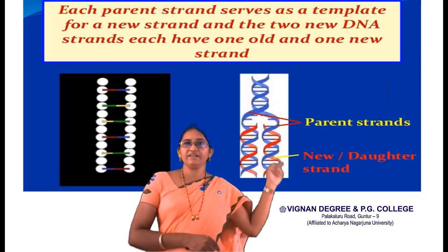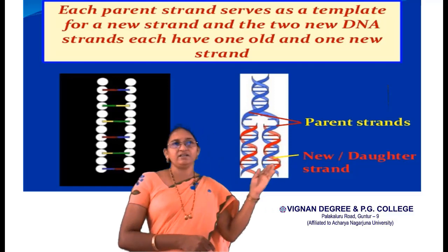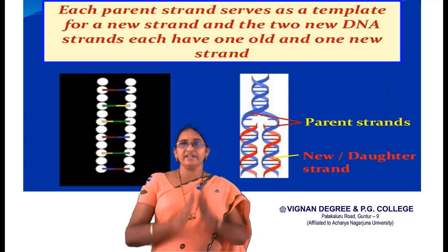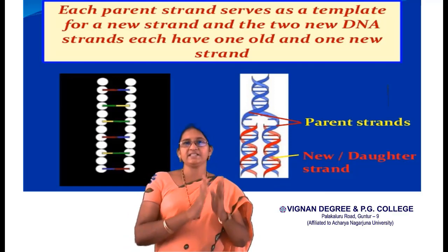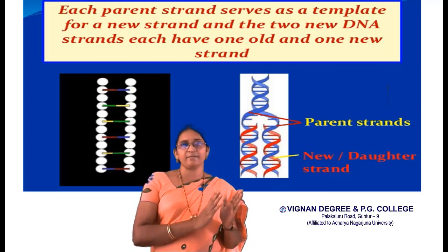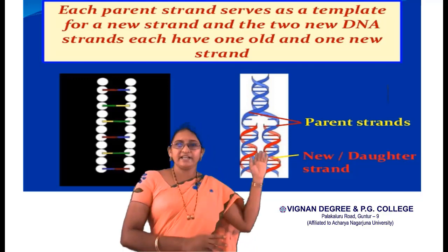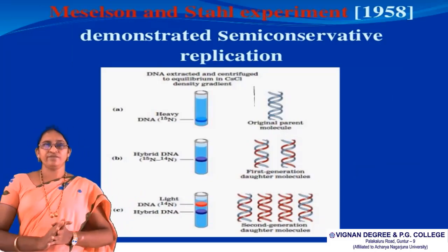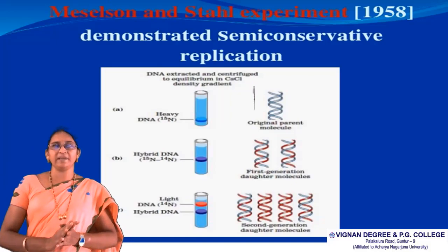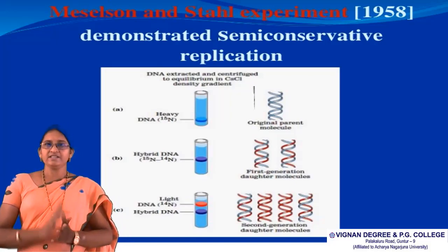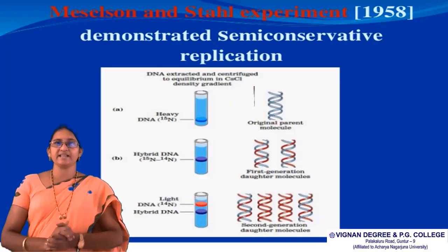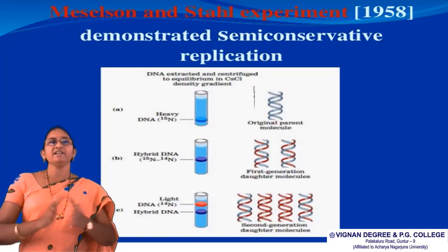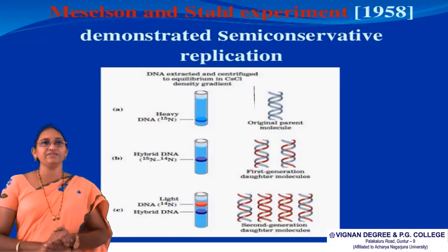These are the three models given by different scientists. In the semi-conservative model of replication, the double-stranded DNA first separates, and from each separated strand acting as a template, a new daughter DNA molecule is synthesized. Now for the proof of semi-conservative replication — the evidence was given by Meselson and Stahl in 1958.